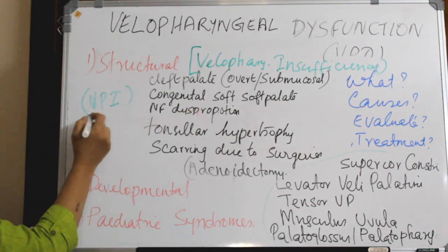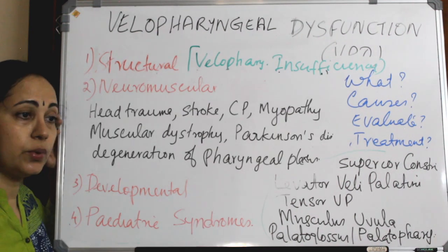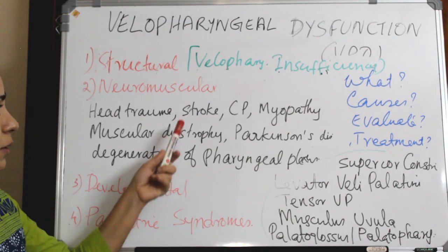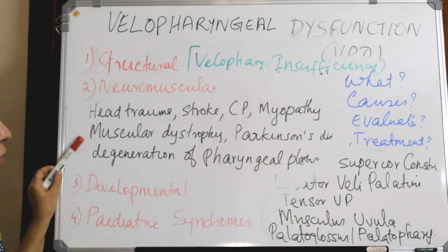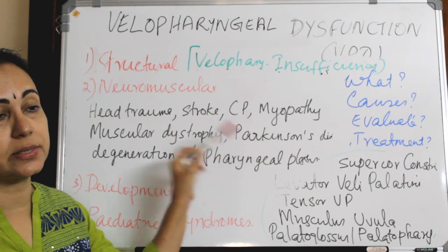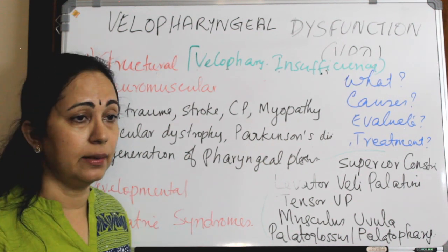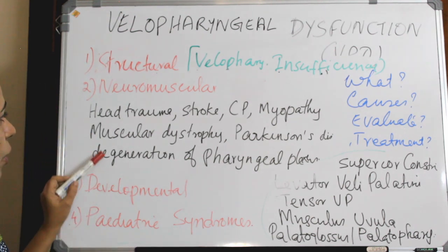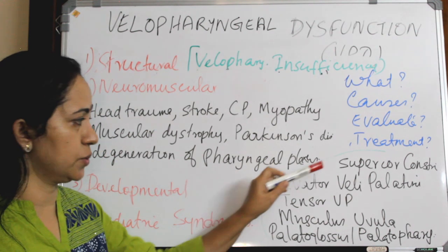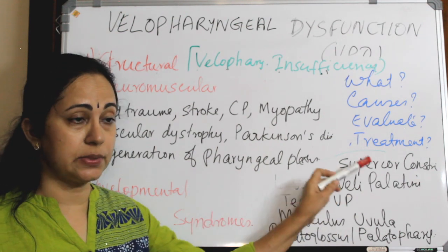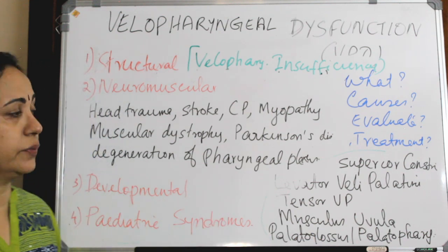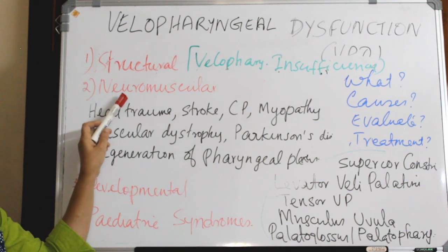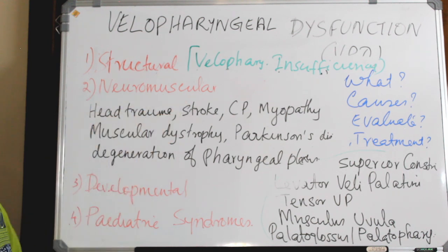The neuromuscular causes of VPD include head trauma, stroke, cerebral palsy, myopathy, muscular dystrophy, Parkinson's disease, amyotrophic lateral sclerosis, and neural causes like degeneration of the pharyngeal plexus, so that the muscles supplying this area degenerate and there is no proper functioning.